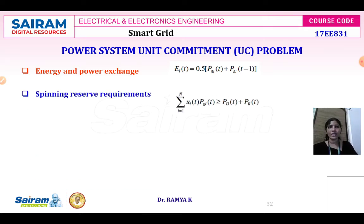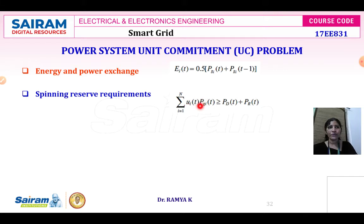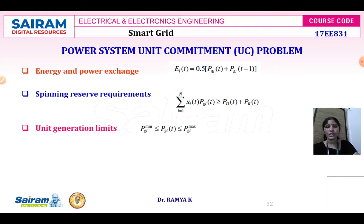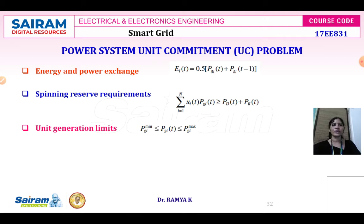The spinning reserve requirement is: summation i equals 1 to N of ui(t) times PGi(t) greater than or equal to Pd(t) plus Pr(t), where Pd(t) is power demand and Pr(t) is spinning reserve required at time t. The unit generation limit constraint specifies that PGi minimum must be less than or equal to PGi(t), which must be less than or equal to PGi maximum, identifying minimum and maximum power output for each unit.